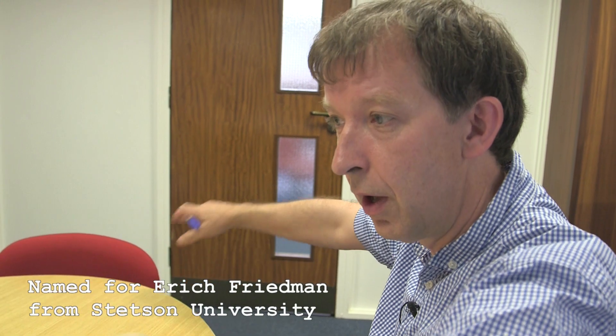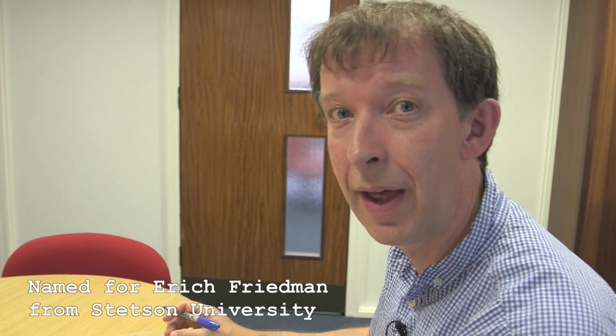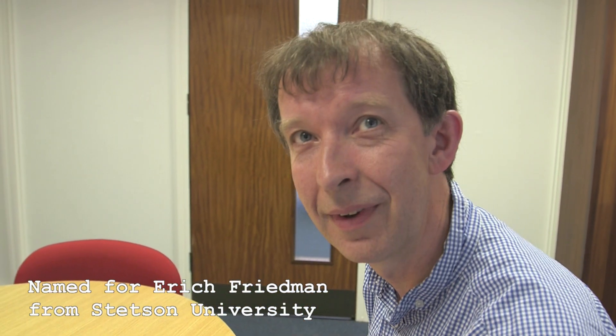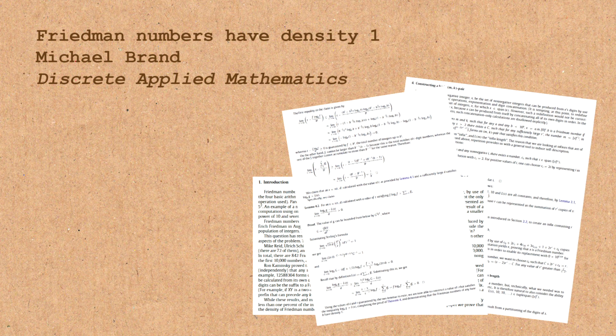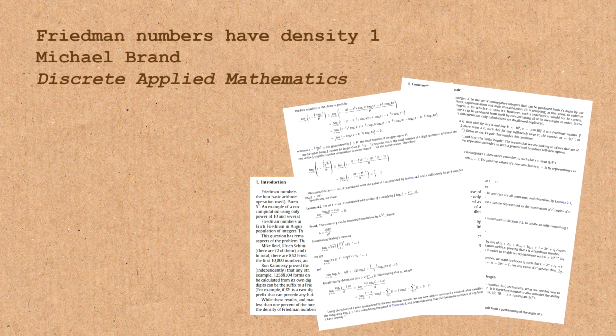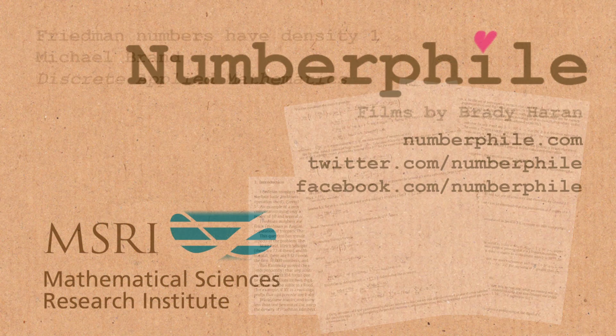So given a distribution of numbers of large n, then you pick a number at random, the likelihood is that it's actually a Friedman number. So the higher we go in the number line, the more dense it becomes with Friedman numbers.